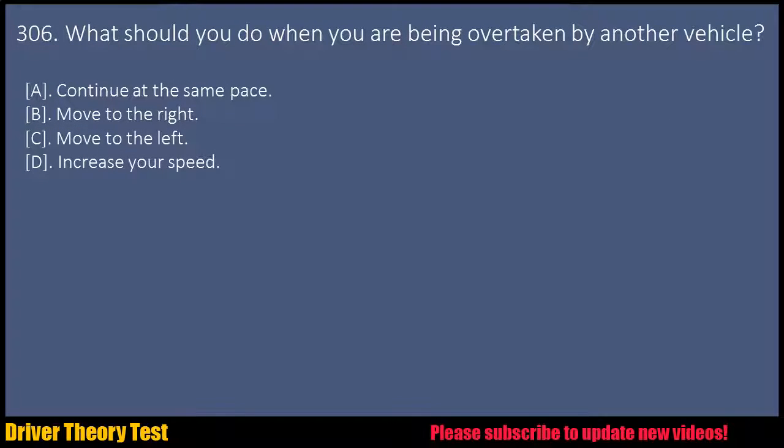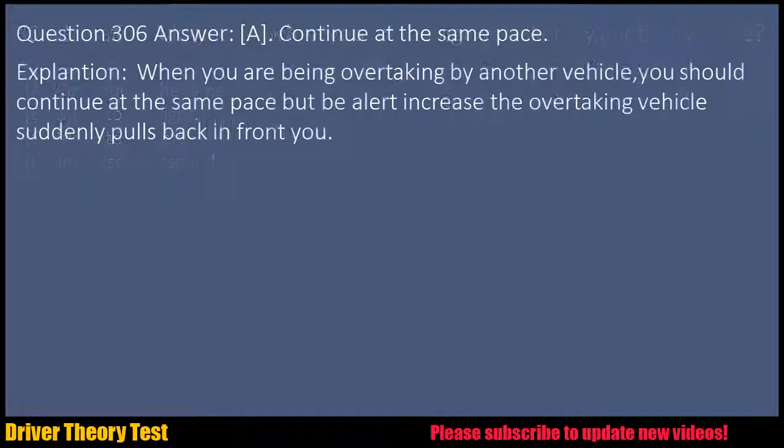Question 306: What should you do when you are being overtaken by another vehicle? a. Continue at the same pace. b. Move to the right. c. Move to the left. d. Increase your speed. Question 306 Answer: A. Continue at the same pace.